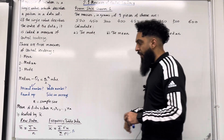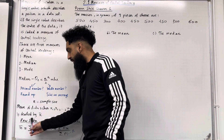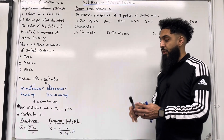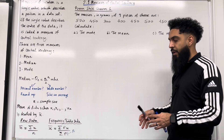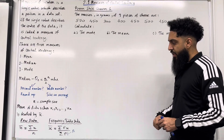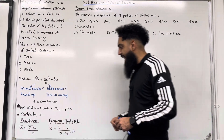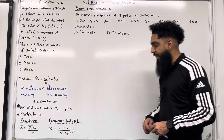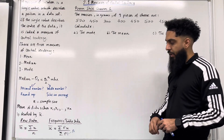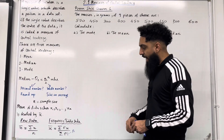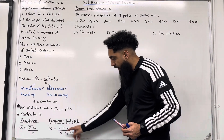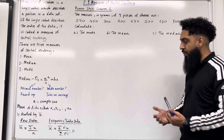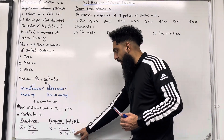To calculate X bar, the mean, from raw data, we use the formula sum of X divided by N, where X represents your data values and N is the sample size. To calculate X bar from a frequency table data set, we use sum of FX divided by sum of F, where F represents your frequency. The sum of F is total frequency, which equals N, the sample size.